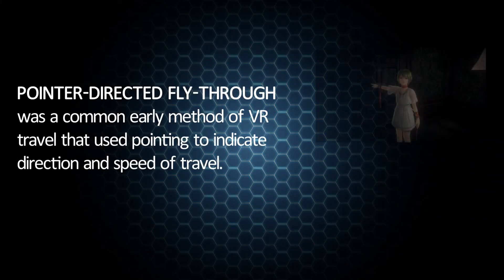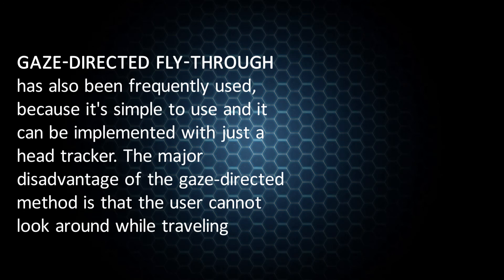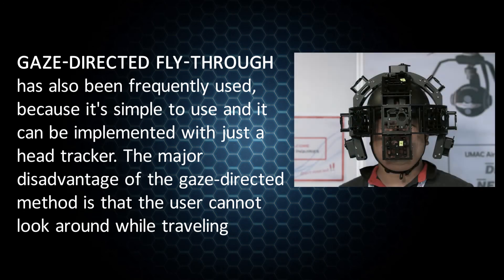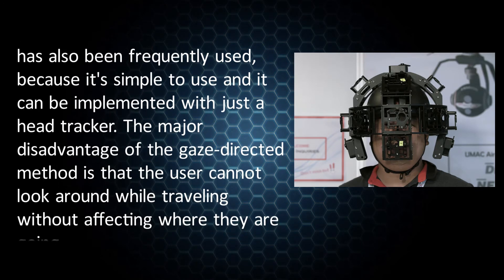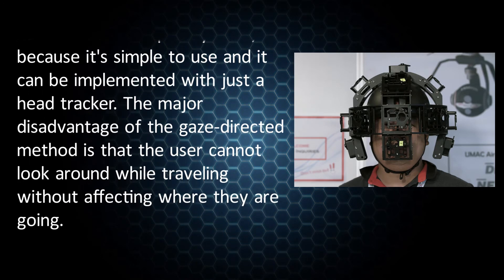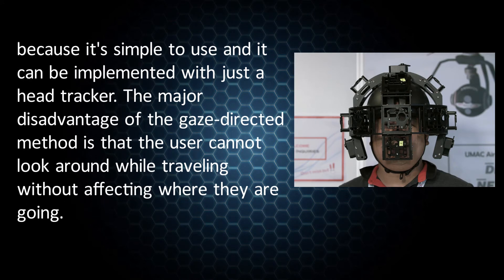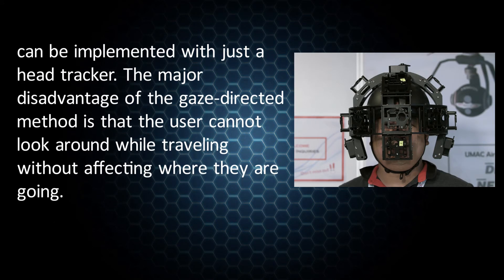Pointer-directed fly-through was a common early method of VR travel that used pointing to indicate direction and speed of travel. Gaze-directed fly-through has also been frequently used because it is simple to use and can be implemented with just a head tracker. The major disadvantage of the gaze-directed method is that the user cannot look around while travelling without affecting where they are going.